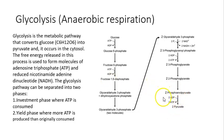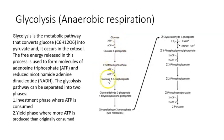The free energy released in this process is used to form molecules of ATP and reduce NADH. The glycolysis pathway can be separated into two phases: the investment phase, where ATP is consumed, and the yield phase, where more ATP is produced than originally consumed.